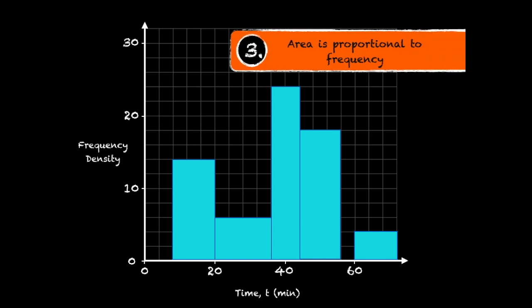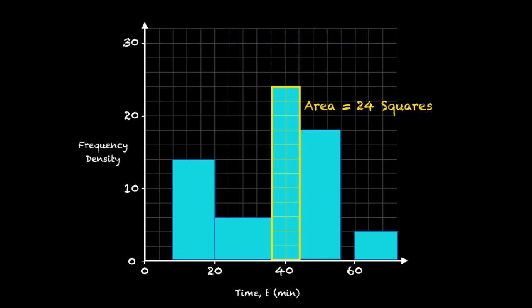Thirdly, the area of each bar is proportional to its frequency. So for example, a bar with an area of 24 squares might have a frequency of 48. And so you could use the fact that each square represents a frequency of 2 to work out the frequencies of the other bars.